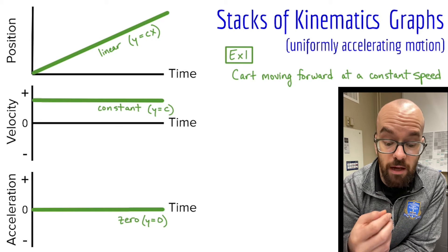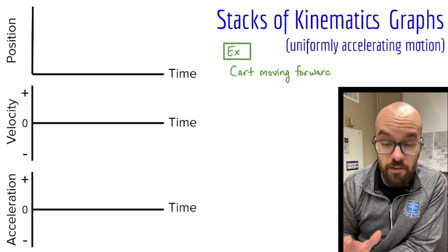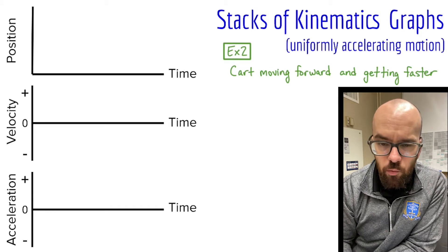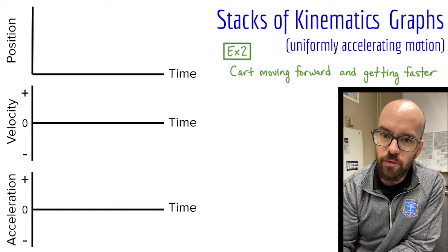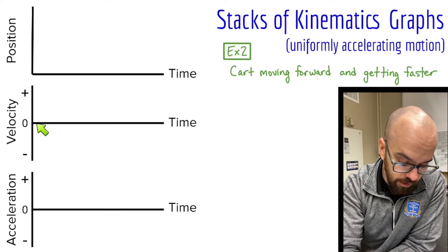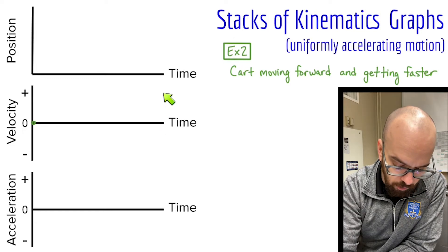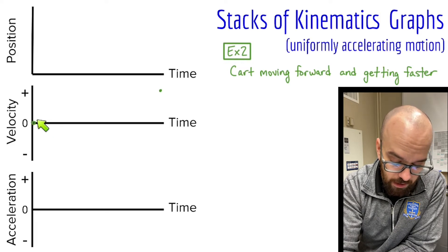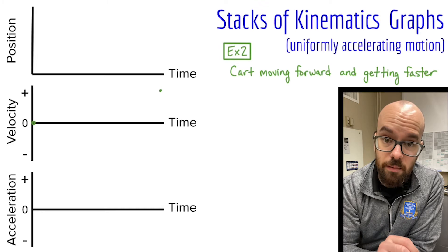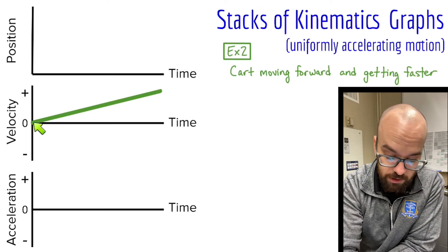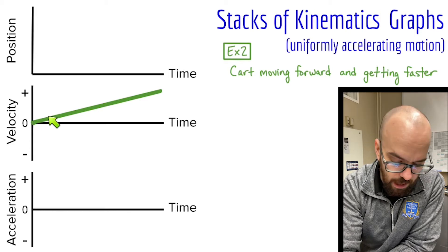Look for a similar pattern in example two, where the cart is moving forward but getting faster — speeding up. At the very beginning of the motion, it wasn't really moving yet, so we start from a velocity of zero. We place a dot at zero, and then since it's getting faster in the positive direction, by the end of our motion we have a dot somewhere up in the positive region. The velocity graph is linear because this is uniformly accelerating motion — the rate at which it's getting faster is consistent throughout.